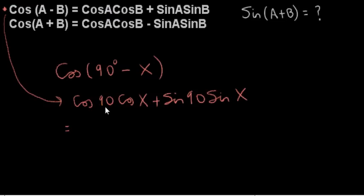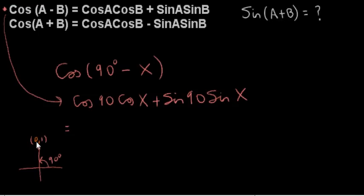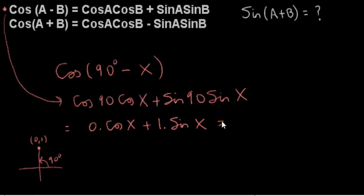Now the cosine of 90 is 0. You can verify this in a calculator, or recall from the unit circle: the coordinates of a point on the unit circle give us the cosine and sine of the angle. The coordinates of the point at 90 degrees are (0, 1). So the first coordinate — the cosine of 90 — is 0, and the second coordinate — the sine of 90 — is 1. This gives us sine of X.